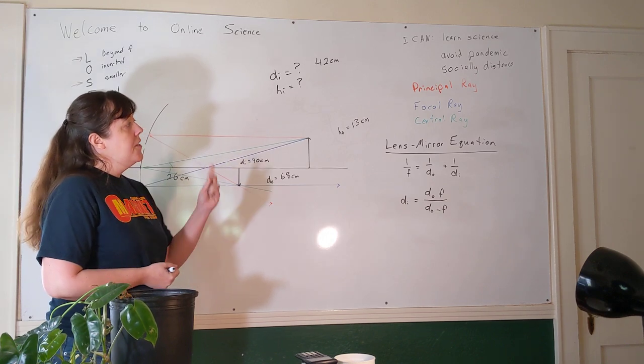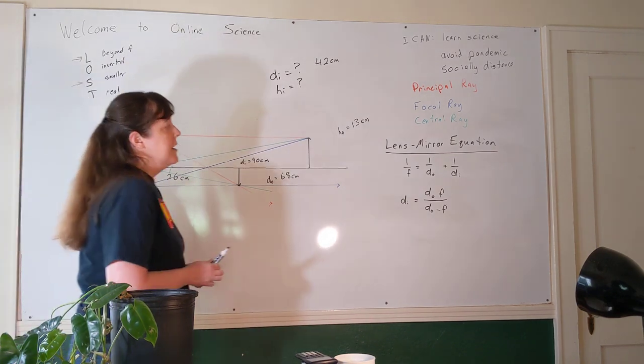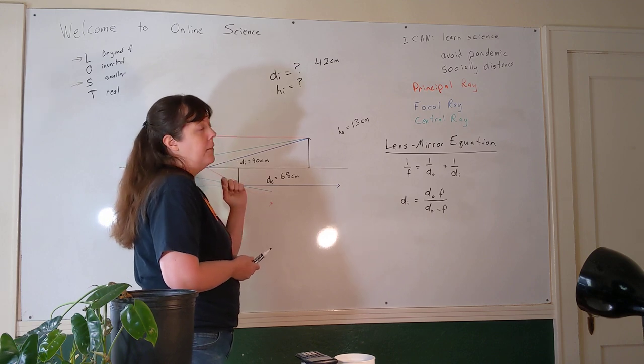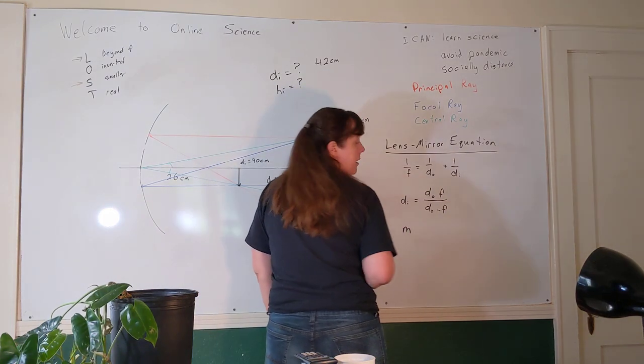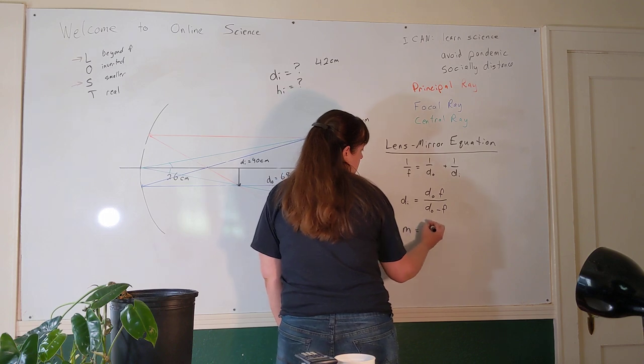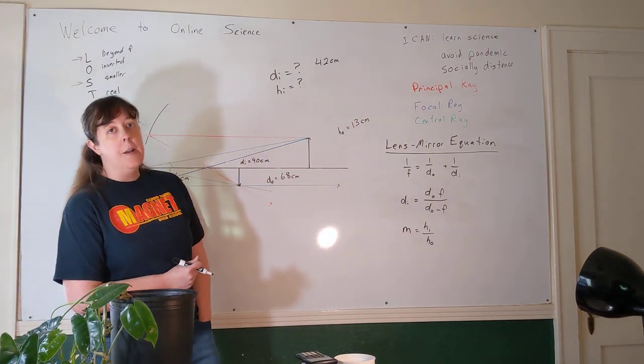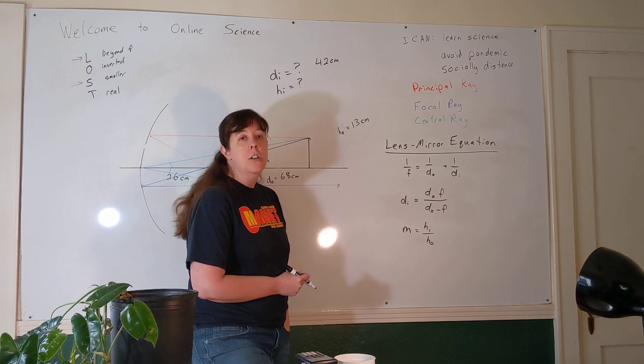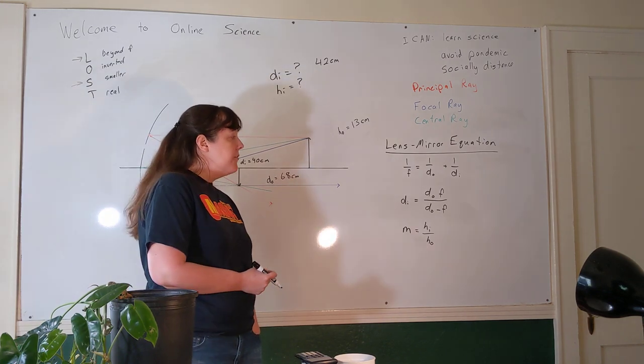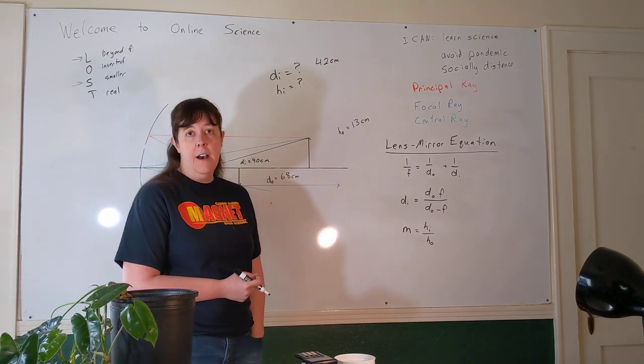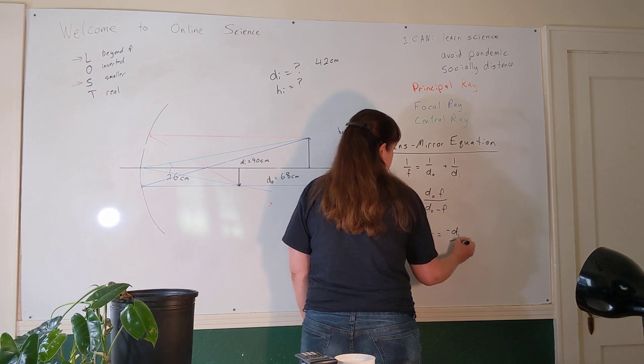Now, what about the height of the image? The height of the image isn't in our lens mirror equation. So we need another equation. That equation is going to relate the image height and the object height, but it's also going to relate the image distance and the object distance. They're both related by the magnification. The magnification of an image equals the image height divided by the object height. This is pretty intuitive. If your image was twice as high as your object, magnification would be 2. The magnification is also equal to minus di over do.